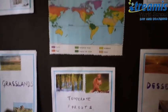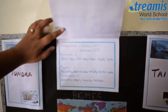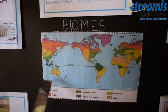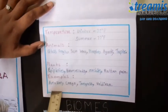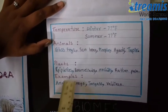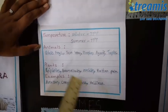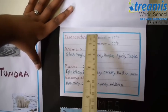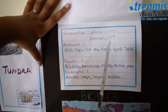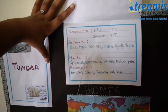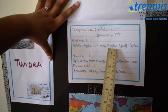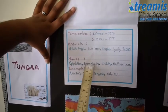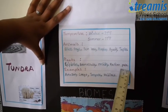We'll start with the tropical rainforest. The tropical rainforests are located near the equator. A few examples of the tropical rainforests are Amazon, Congo, Tongass, and Valdivian. The temperature in the tropical rainforests, both in winter and summer, is 77 degrees Fahrenheit. Few animals that live there are glass frogs, sun bear, morpho, agouti, and tapir. Few plants that grow there are bromeliads, orchids, and rattan palm.